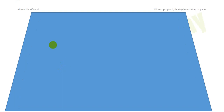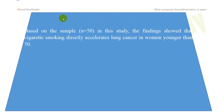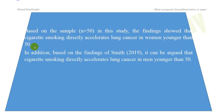In the discussion section, the opposite of the introduction happens. You start with more specific sentences — your own specific findings — and then move outward. You start this section based on your own findings, then go on to generalize them. For example, your sample of 50 people showed that cigarette smoking directly accelerates lung cancer in women younger than 50. This is right after your results section — you start with what you actually found.